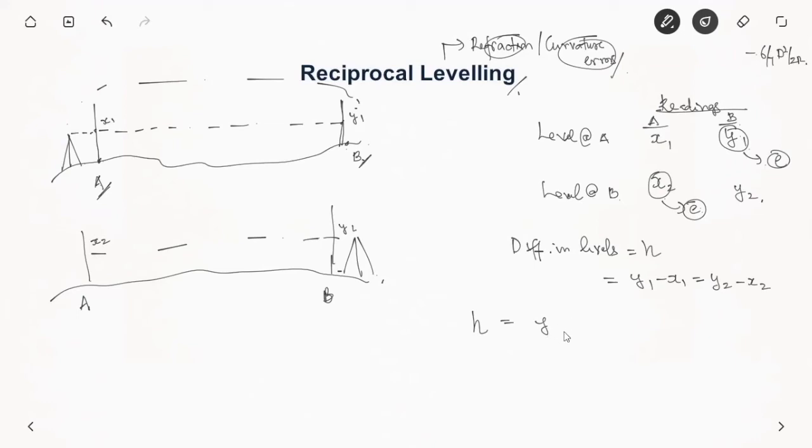So this will be y1 minus E minus x1, and by this we can calculate as y2 minus x2 minus E. So because this y1 has an error here we are taking that, and because x2 has an error we are taking that also into consideration.